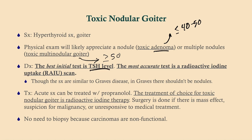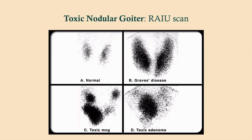The treatment is going to be very similar here — it's propranolol for symptoms. The treatment of choice more definitively is radioactive iodine therapy. Surgery is done if there is a mass effect — so if there's compression on the esophagus or trachea, or if there's a suspicion for malignancy, or if it's unresponsive to medical treatment. There is no need to biopsy these nodules because carcinomas of the thyroid are non-functional.